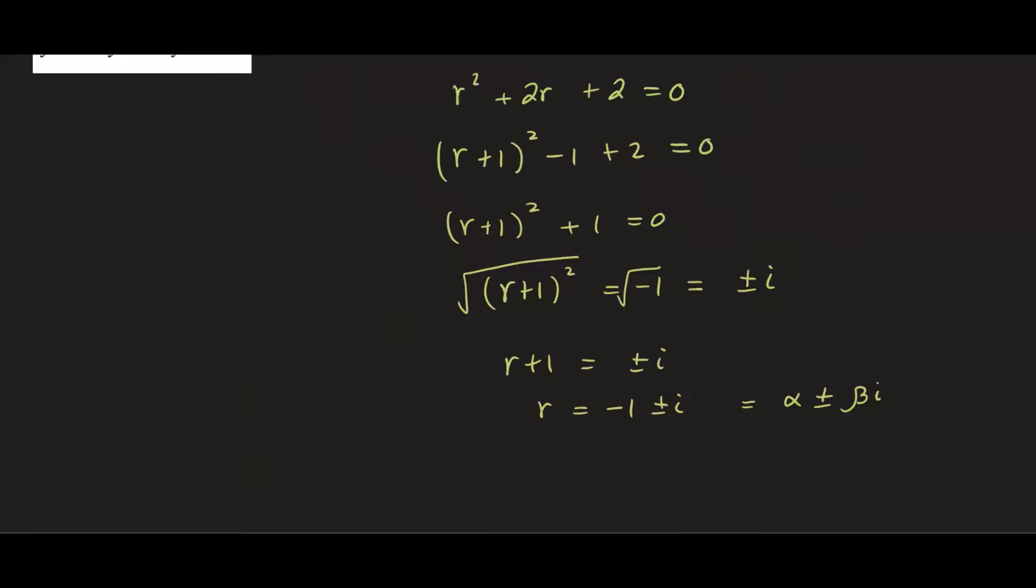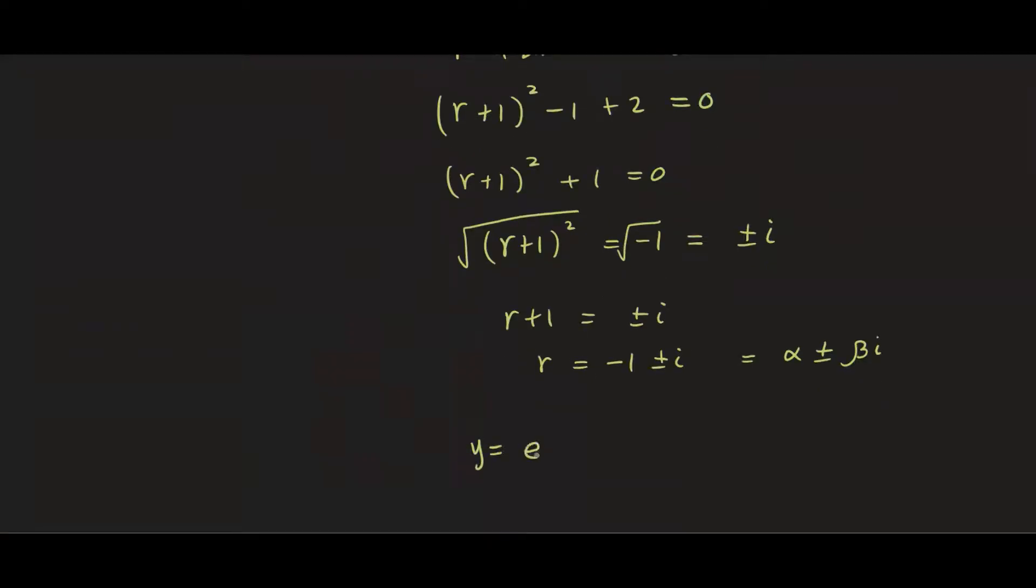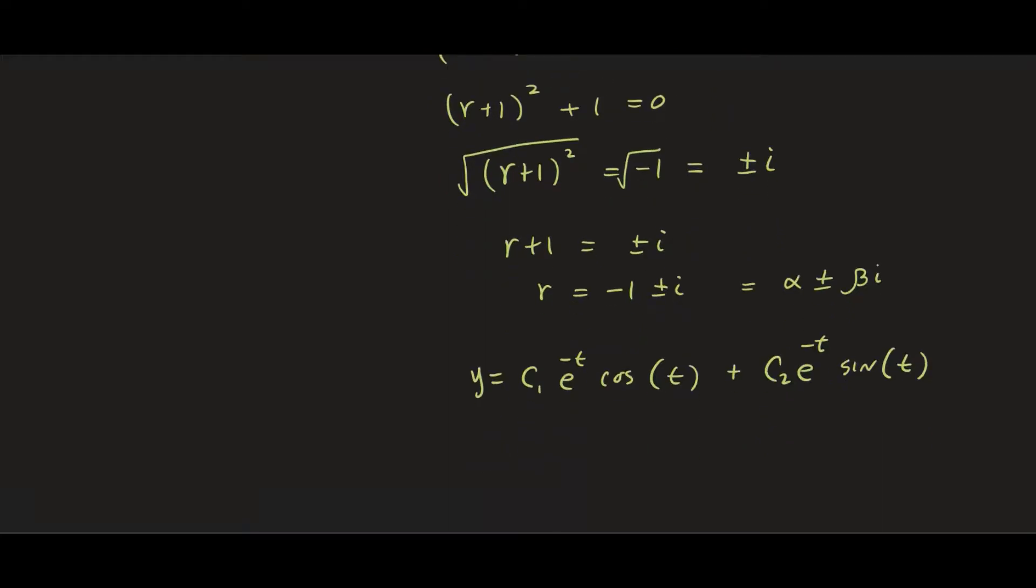So the solution would be y equals e to the alpha t. So let me just write down the constant first. c1 e to the alpha t so that's negative 1t cosine of beta t which is 1t plus c2 e to the alpha t again negative t sine of beta t which is 1t. That's how you can write the solution to complex roots.